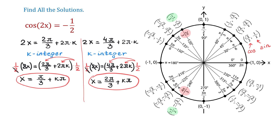So this equation has infinitely many solutions, represented by x equals π over 3 plus kπ and x equals 2π over 3 plus kπ. Thank you for watching, and please leave a comment and subscribe.